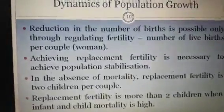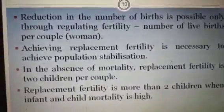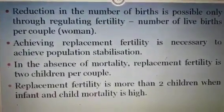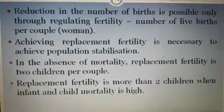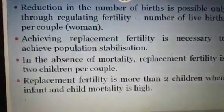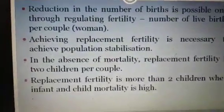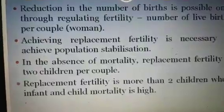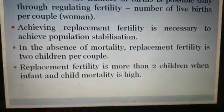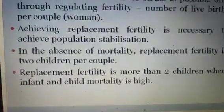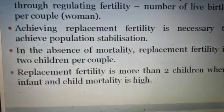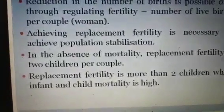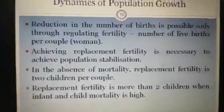Talking of the dynamics of population growth, the reduction in the number of births is possible only through regulating fertility — that is the number of live births per couple or woman. Achieving replacement fertility is necessary to achieve population stabilization — recall the demographic transition model. In the fourth stage, many countries have reached the population stabilization period. In the absence of mortality, replacement fertility is two children per couple, which is a feature of developed nations. When infant and child mortality is high, replacement fertility must be more than two children, which is the specific feature of least developed or developing nations.